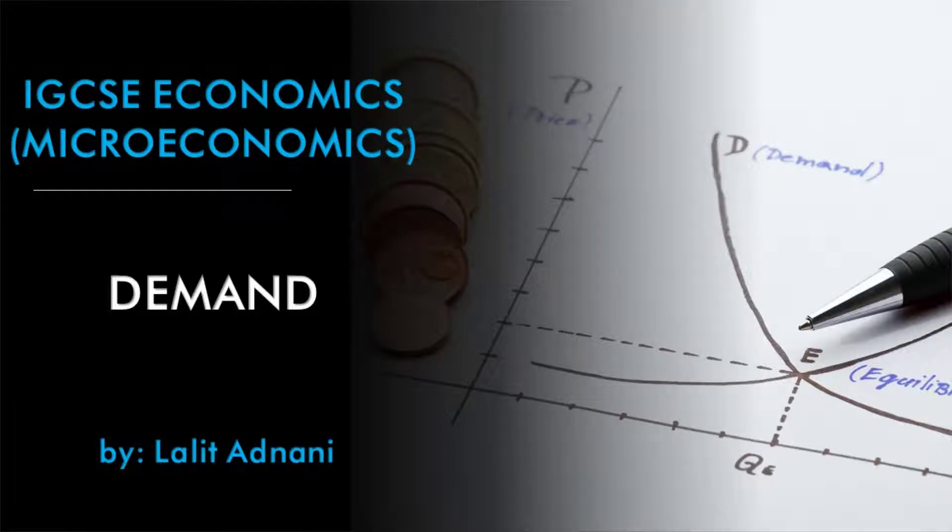Welcome to edXworld and another video in the IGCSE economics series. This video is going to be on demand — one of the most interesting topics in the microeconomic section. The demand, the supply, and later on the equilibrium and disequilibrium. It is very interesting to understand how consumers and producers react to changes in price or any other factors other than price.